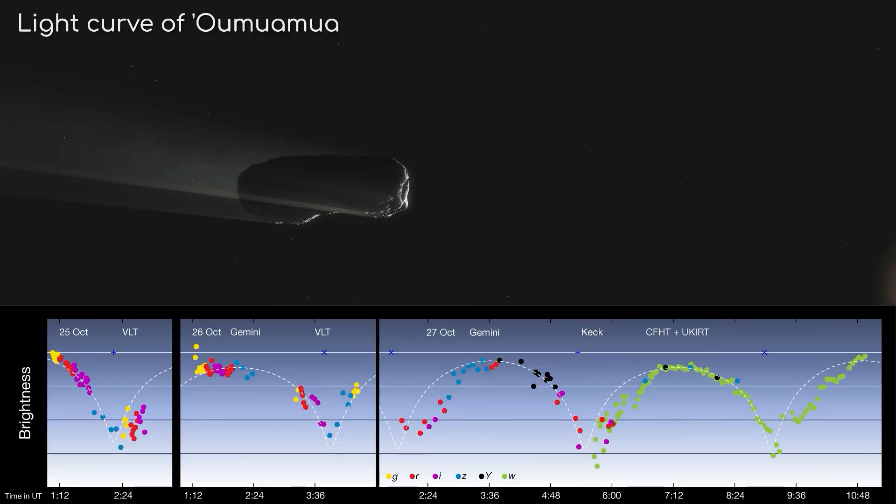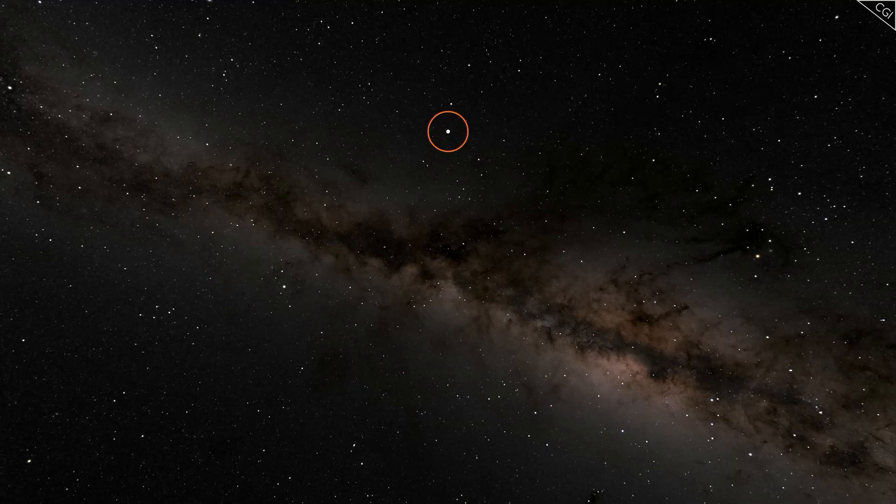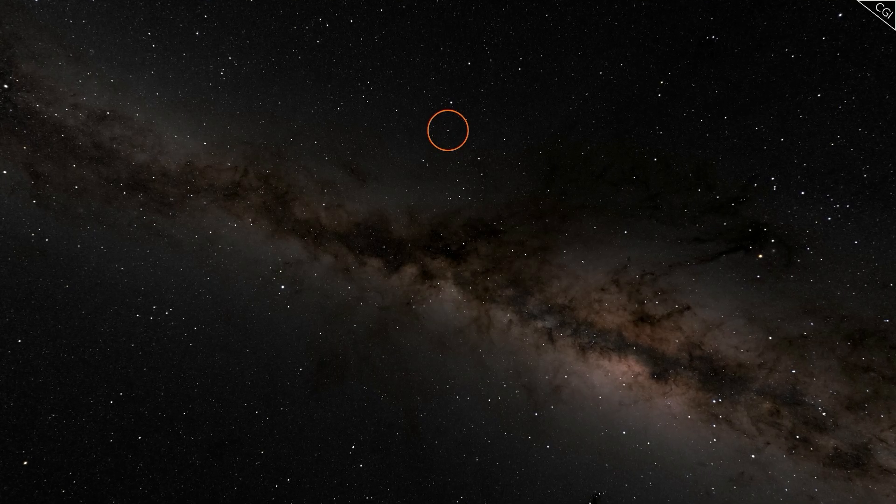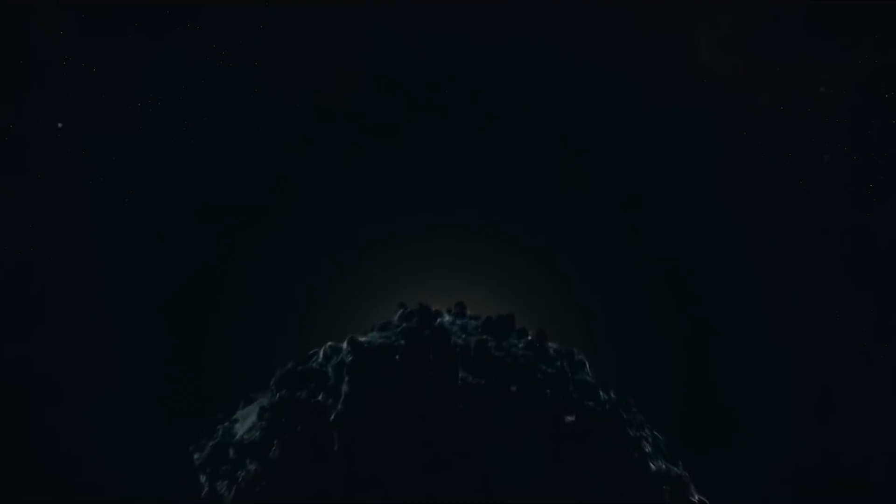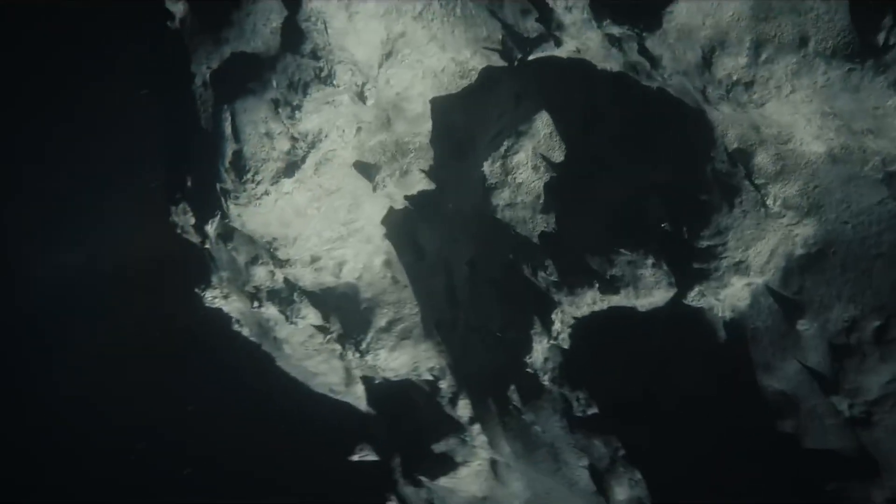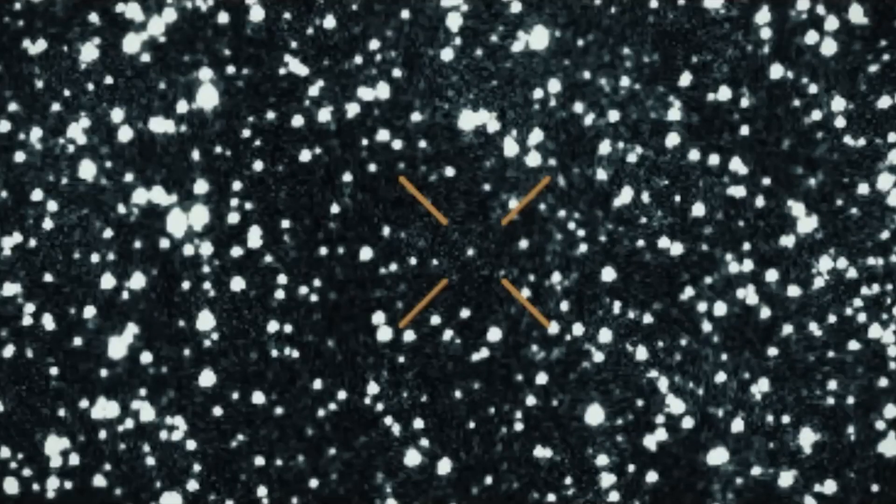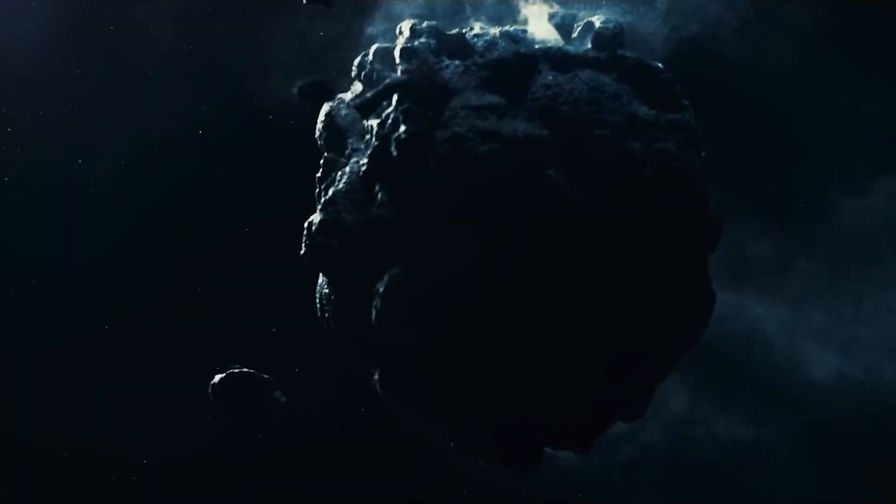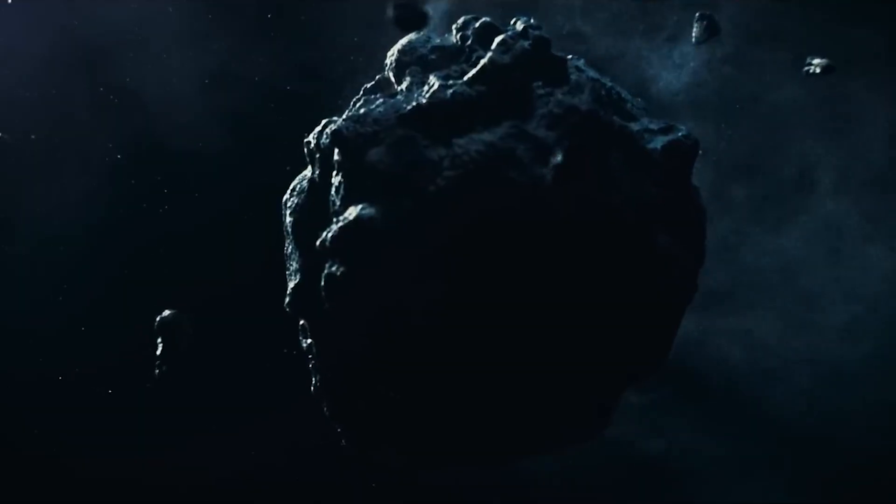This was the same signature that sparked debate with Oumuamua years earlier. But this time, it was stronger. More precise. More deliberate. Harvard astrophysicist Avi Loeb, who once theorized that Oumuamua might have been an alien probe, immediately called for attention. He urged the scientific community to measure non-gravitational acceleration. A phenomenon that, if detected, could indicate the presence of artificial propulsion. And that's exactly what they found.